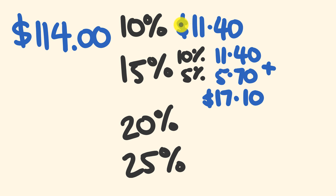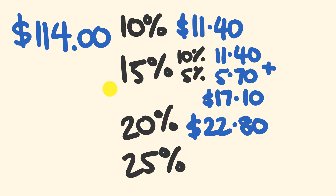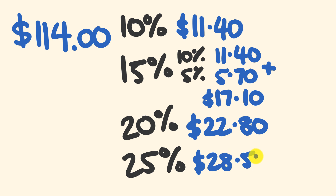For 20% of $114, we double the 10% amount: double $11.40 is $22.80. For 25%, we divide $114 by four, which gives $28.50. If that number feels tricky, you could round to $110 or $120 to make it easier — you'd get a tip of about $30.